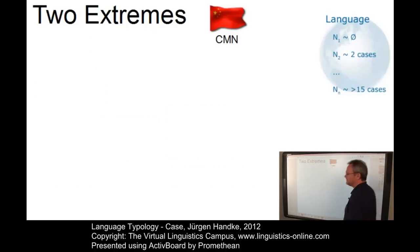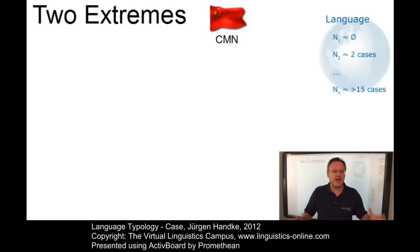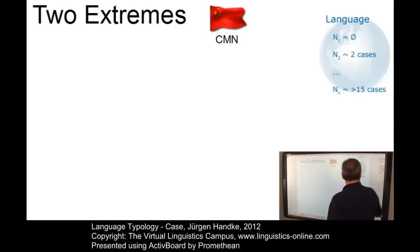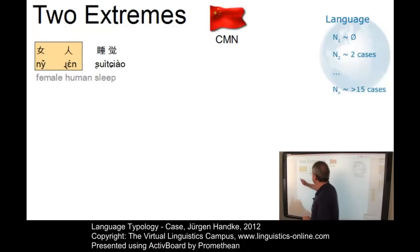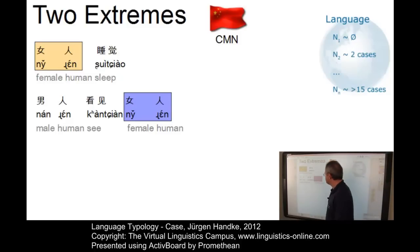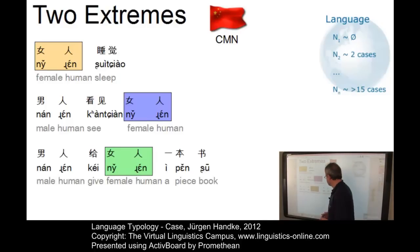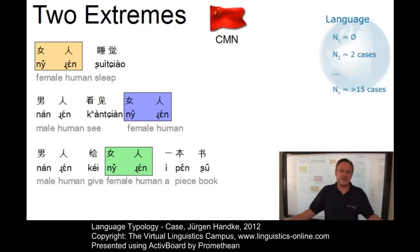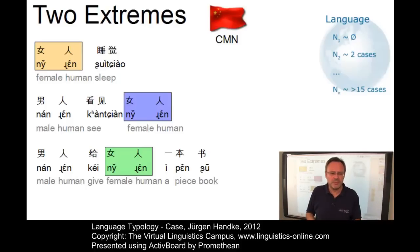Other languages, for example the Sino-Tibetan languages, have relatively little or no case marking at all. Here is an example from Mandarin Chinese. The woman is sleeping — 女人睡覺. The man sees the woman — 男人看見女人. The man gives the woman the book — 男人給女人一本書. In all three examples, the Chinese equivalent of 'woman' does not undergo any morphological alternation. So there is no case marking in Mandarin Chinese.